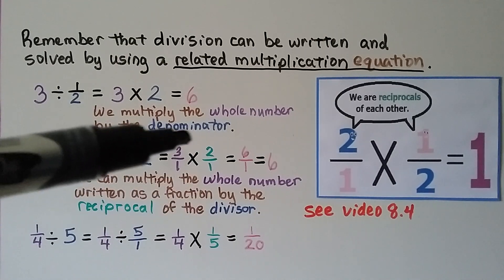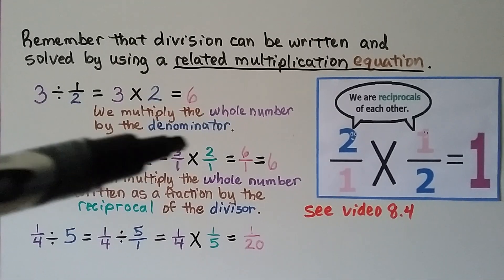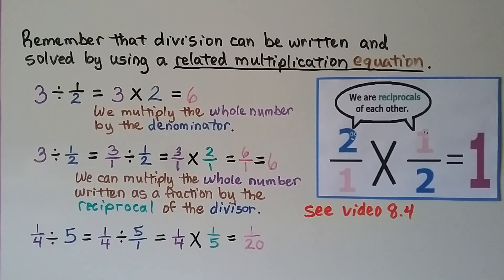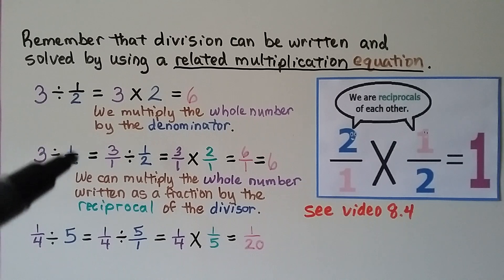Then we get 3 times 2, which is 6, multiplying the numerators, and 1 times 1 equals 1, multiplying the denominators, which simplifies to 6 whole. So we multiply the whole number written as a fraction by the reciprocal of the divisor. The divisor is the one we turn into a reciprocal.